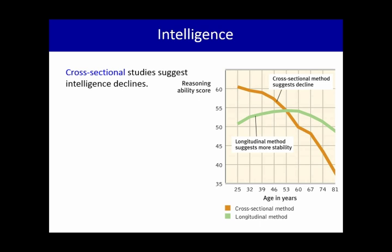In other words, the person who is 25 years old and took this test can't look at these results and come to the conclusion that by the time I'm 81, I'll be scoring like that.